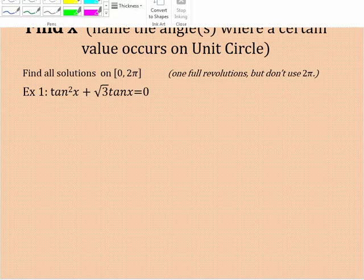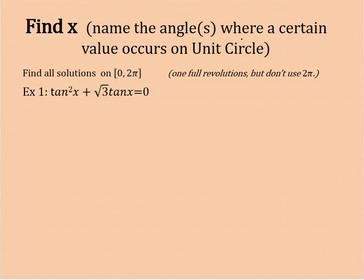Alright, so here's what the directions will say. Name the angle or angles where a certain value occurs in the unit circle. You're using from 0 to 2π, one full revolution, but you don't use 2π, we just use 0. So here's an example problem. We need to solve this. So I want you to notice we are just doing GCF, greatest common factor.